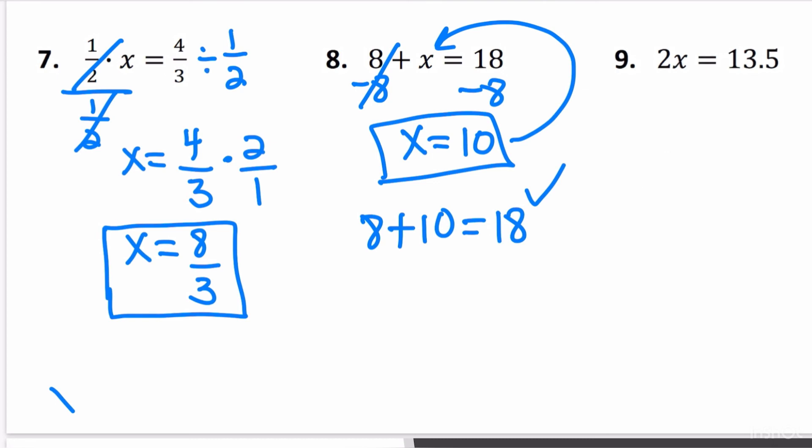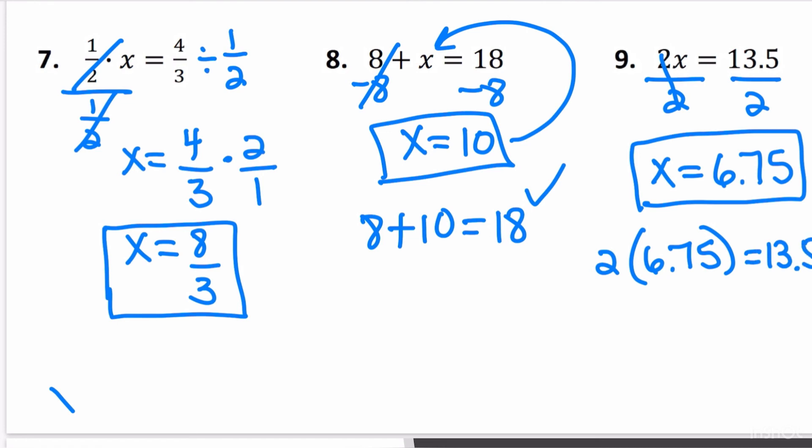In question number 9, we have 2x is equal to 13.5. We're going to go ahead and divide by 2. So we know that x is equal to 6.75. Once again, if you take your calculator and you multiply 2 times 6.75, you'll see that you get 13.5.